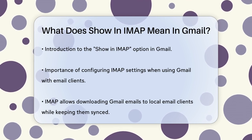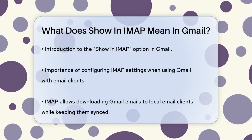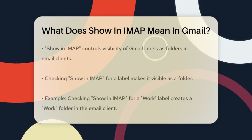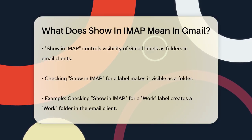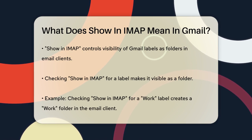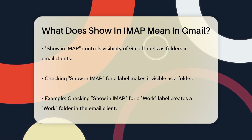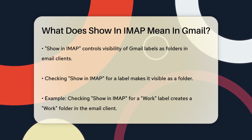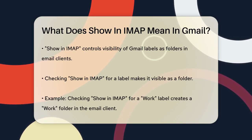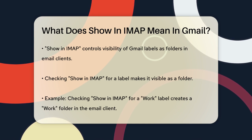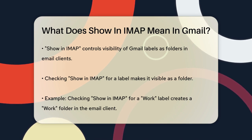The Show in IMAP option is crucial here. It determines which of your Gmail labels will be visible as folders in your email client. If you check the Show in IMAP box for a particular label, that label will appear as a folder in your email client, meaning you can access and manage those emails just like any other folder.